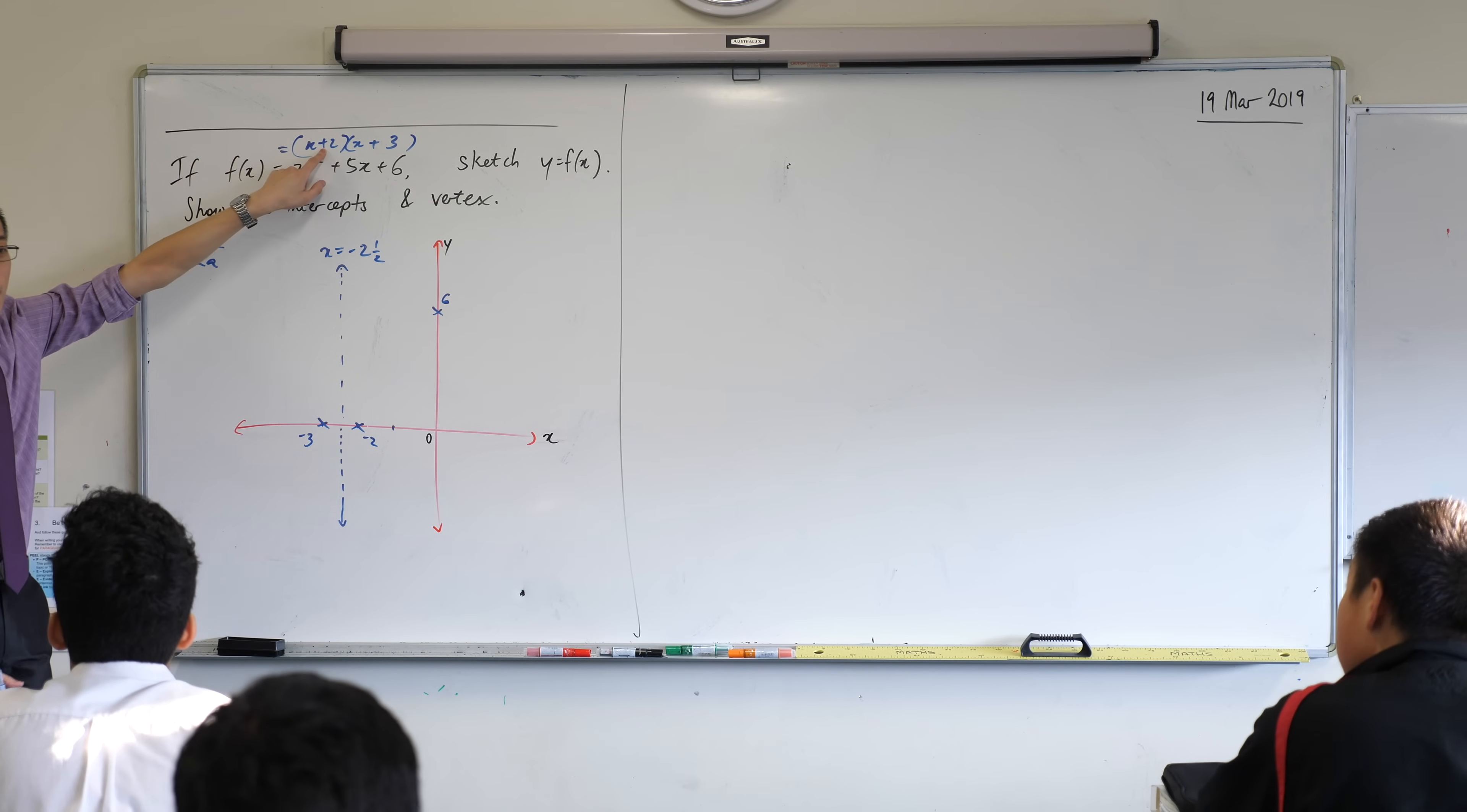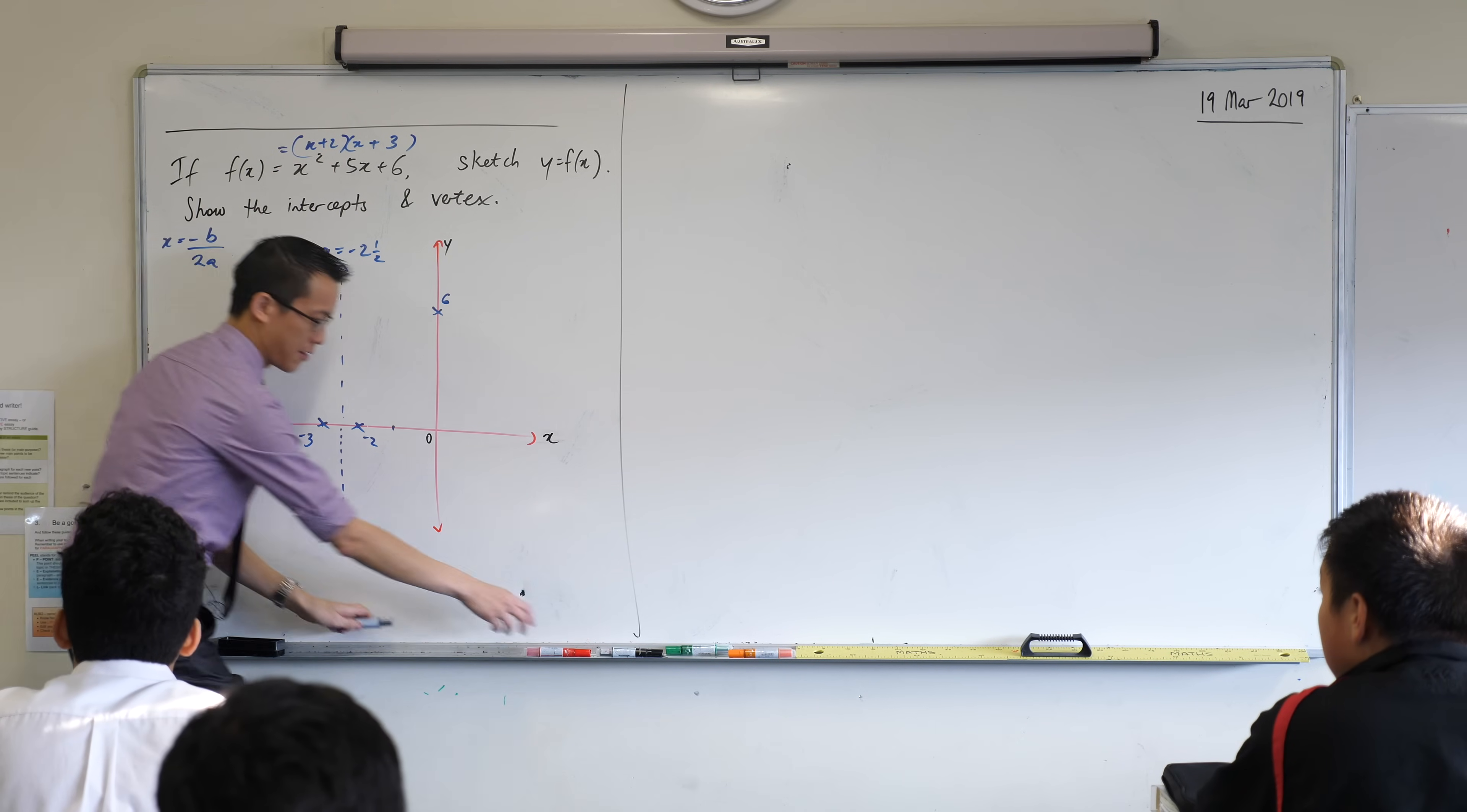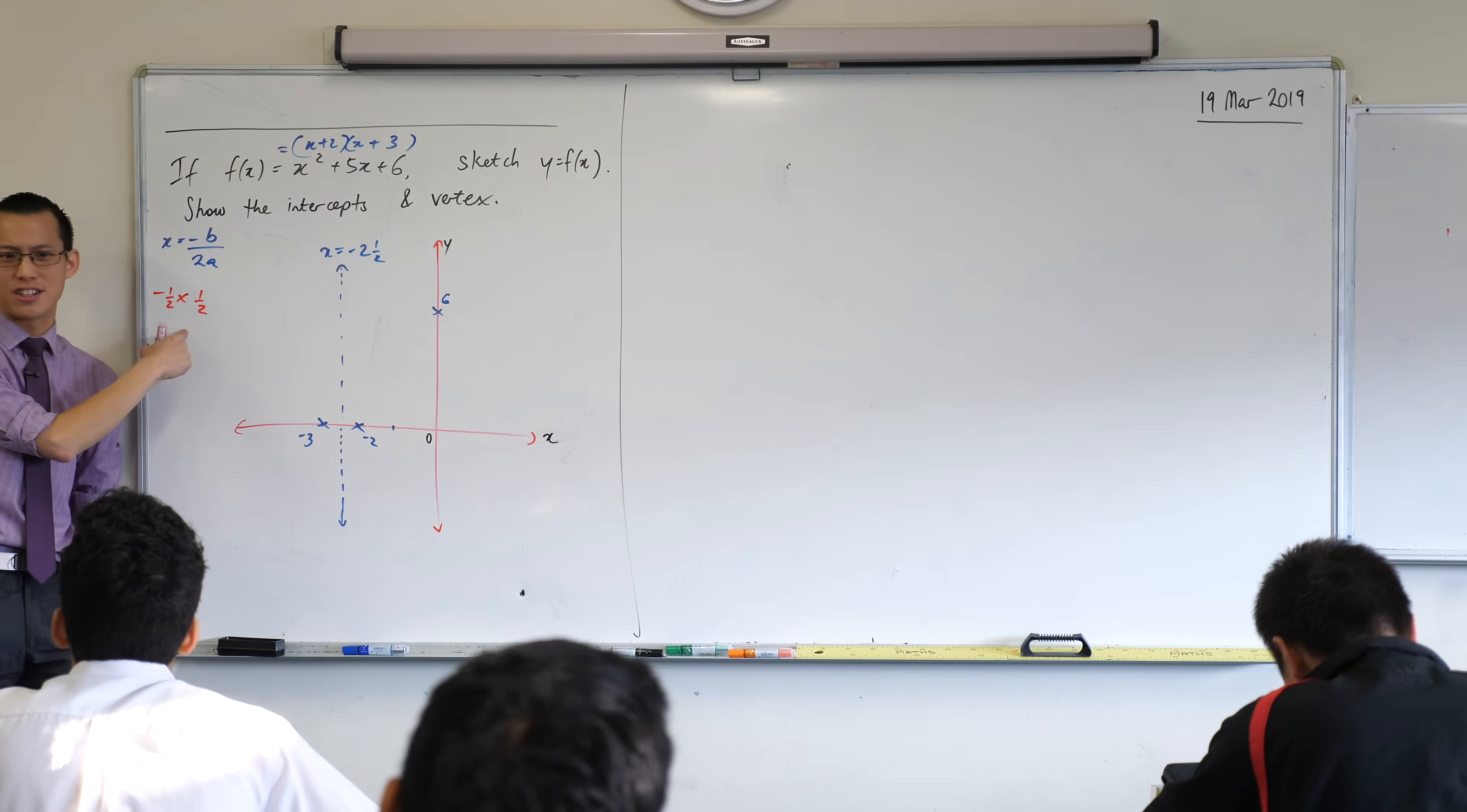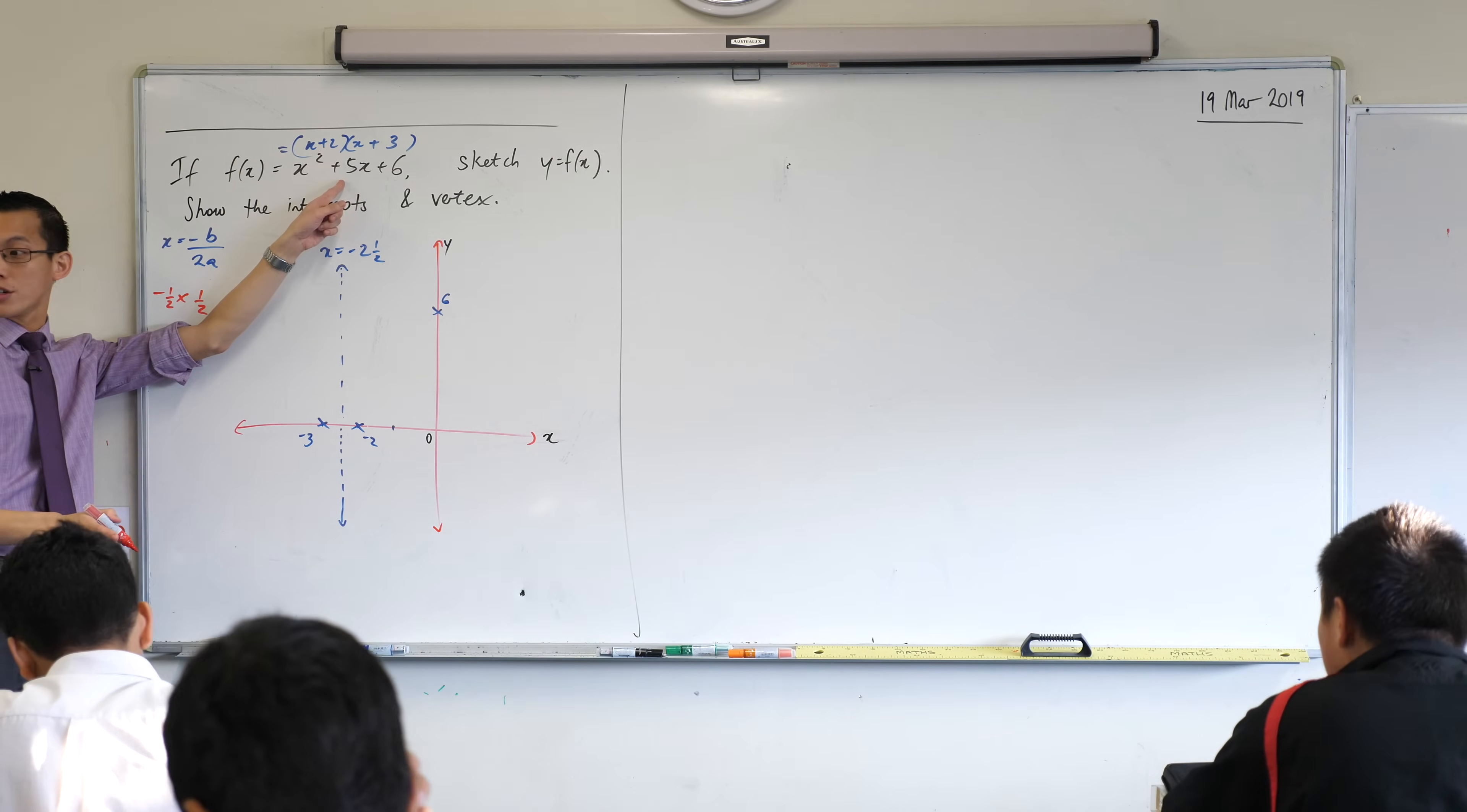You can put x equals negative 2 and a half into either of these because what the factorization is saying is that the same thing, just different ways to write it. This is easier to see the x-intercepts. Actually, I'm going to argue it's also easier to calculate the y-value of the vertex through this because look at it. If I put a negative 2 and a half into here, what's negative 2 and a half plus 2? Negative a half. What about negative 2 and a half plus 3? That's a half. That's easy to do. That's negative a quarter just like Ashan said. Hopefully you got that confirmed if you put that into your calculator.